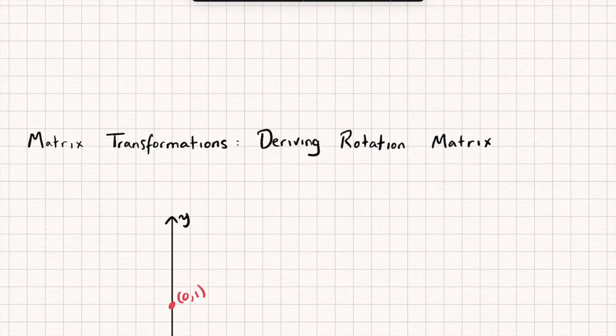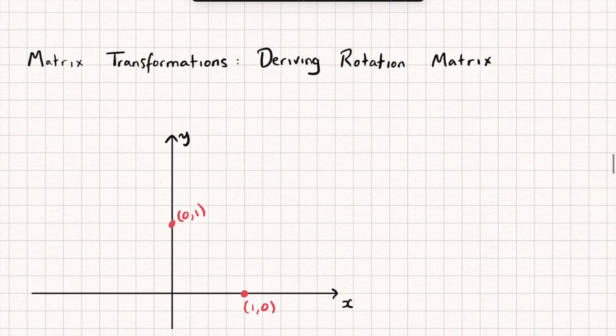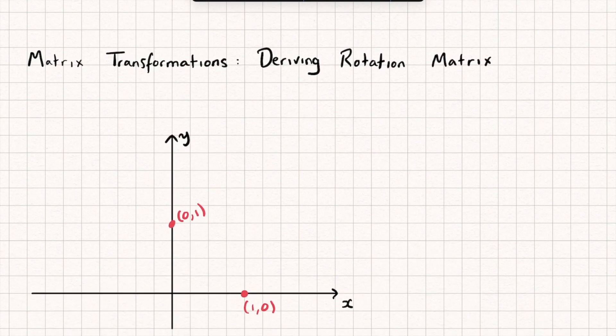Let's start by deriving a generic rotation matrix which is going to describe a rotation anti-clockwise about the origin by any angle we like. To find a transformation matrix, we look at what happens to both the points (1, 0) and (0, 1) under that transformation, and that gives us the new columns of our transformation matrix. So let's focus on the point (1, 0).